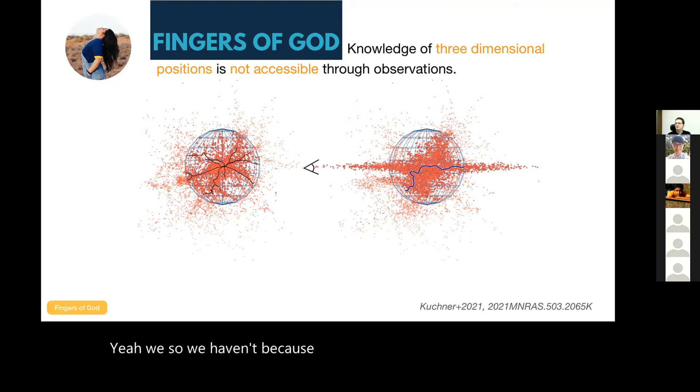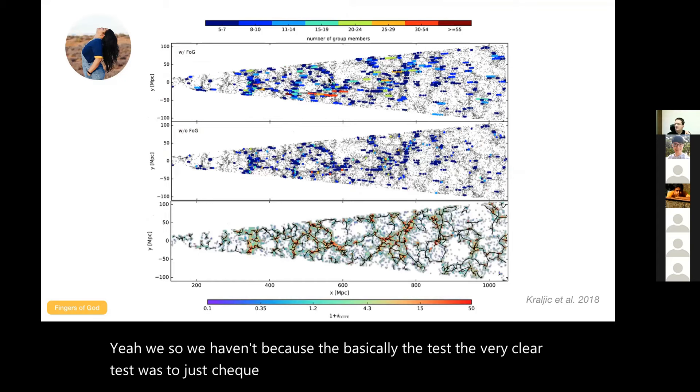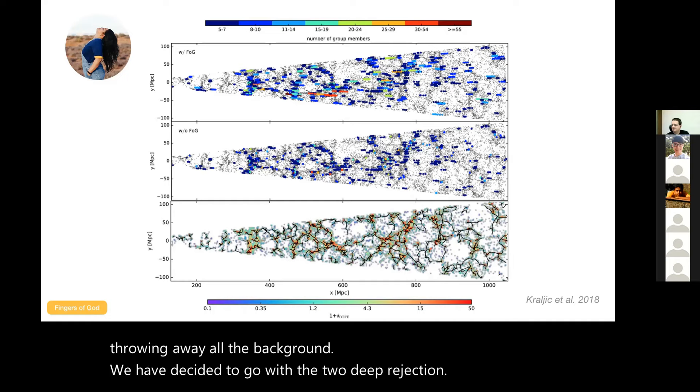We haven't because the basically the test, the very clear test was to just check what Katarina did here, if we can do that with just looking at the clusters. So we haven't. But I acknowledge that many other groups, especially in CUSPTIME, there is a group that have looked at other ways of doing this. Because we have such a strength with WEAVE of having so many spectroscopic redshifts and identifying the volume so well and throwing away all the background, we have decided to go with the 2D projection. I see. Thanks very much.